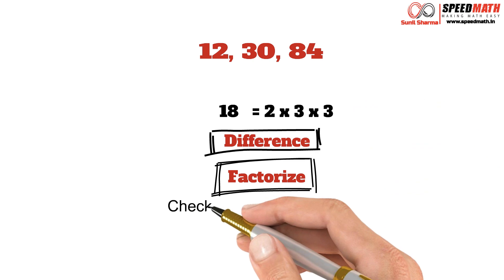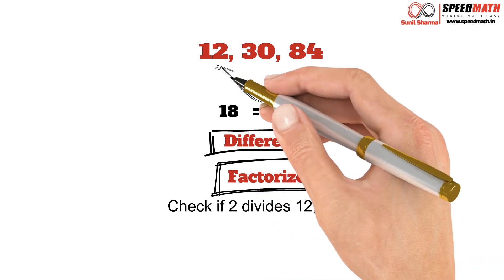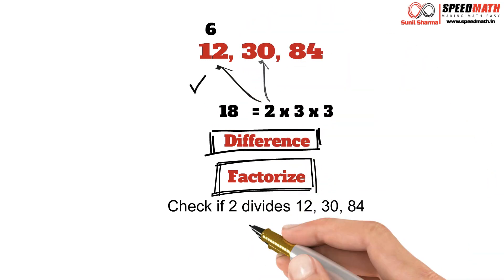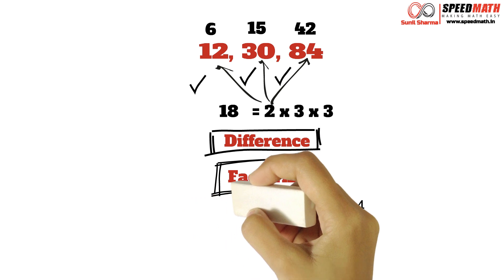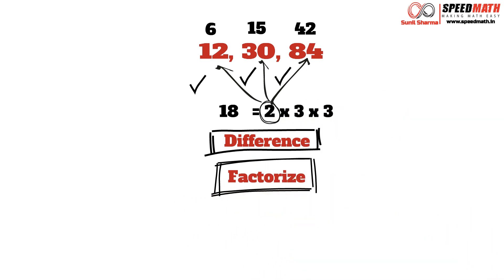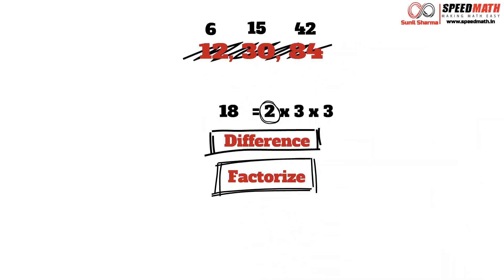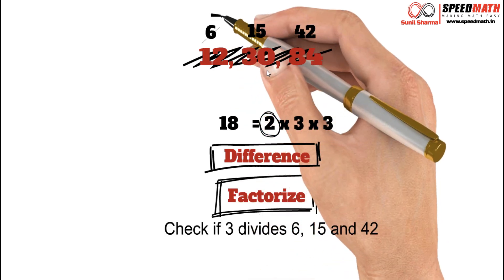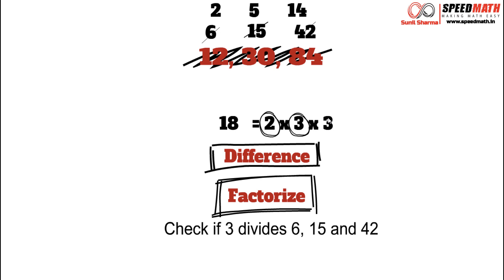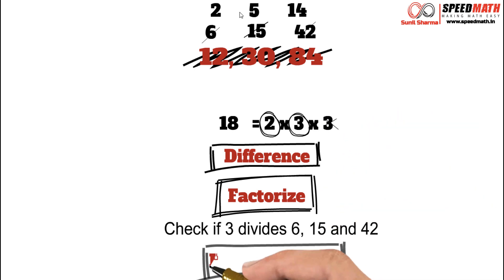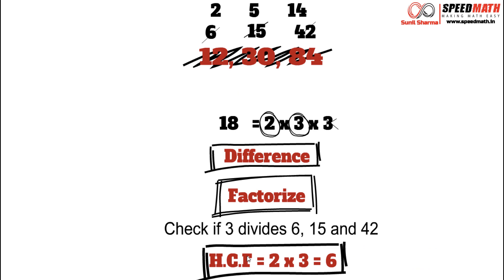18 can be factorized as 2 into 3 into 3. We are going to repeat the process with all the factors. Check if 2 divides all 3 numbers: 2 times 6 is 12, 2 times 15 is 30, and 2 times 42 is 84. So yes, 2 divides all 3 numbers — we select 2. Now we check the quotients 6, 15 and 42. Check if 3 divides 6, 15 and 42: yes, 3 divides 6 twice, 3 divides 15 five times, and 3 divides 42 fourteen times — so we select 3 as well. However, the last factor 3 does not divide 2, 5 and 14, so we discard the last 3. Therefore the HCF will be 2 into 3, which is 6.